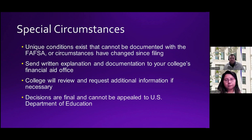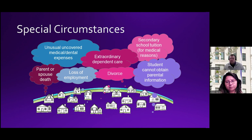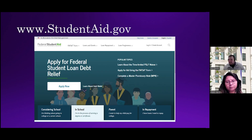Special circumstances are unique conditions that exist that cannot be documented on the FAFSA, or if something has changed since your filing — you'll send a written explanation and documentation to the colleges through our appeal process. We'll review the information and determine if we can do anything or need additional documentation. All decisions made by colleges are final and cannot be appealed to the Department of Education. Some special circumstances include divorce, loss of employment, death of a parent or spouse, or unusually high uncovered medical or dental expenses — there are many more circumstances that may apply to your family as well.